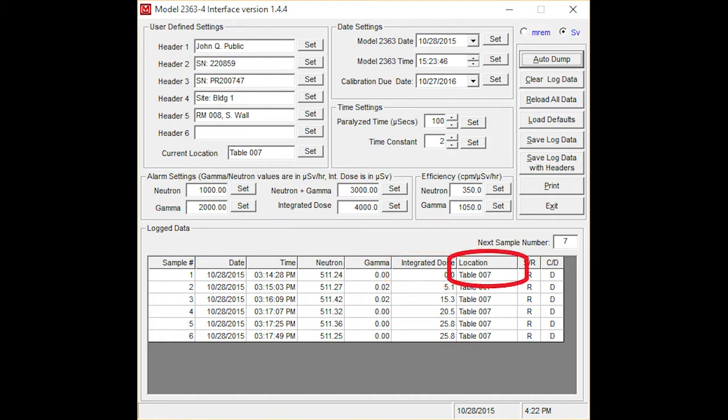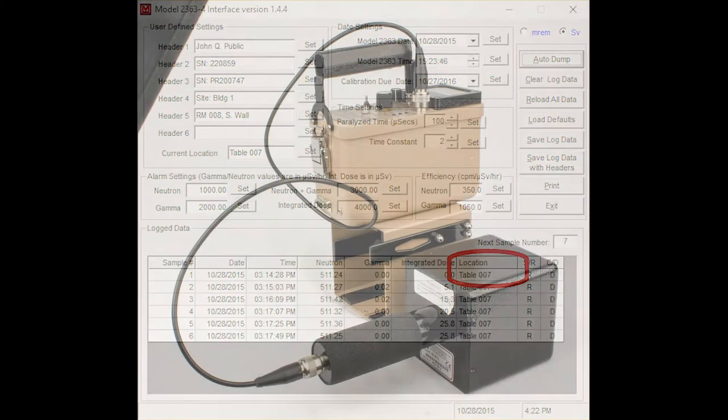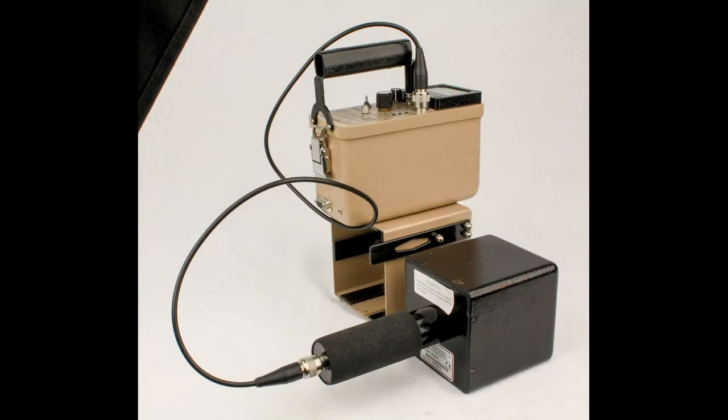Each data point also includes a location identifier consisting of up to 10 characters. Please note that the 2363 and Priscilla detector in this video are set for factory default settings.